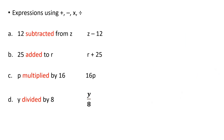Expressions using plus, minus, multiplication, and division. 12 subtracted from Z can be written as Z minus 12. 25 added to R means R plus 25. P multiplied by 16 can be written as 16P. Y divided by 8 is written as Y divided by 8.